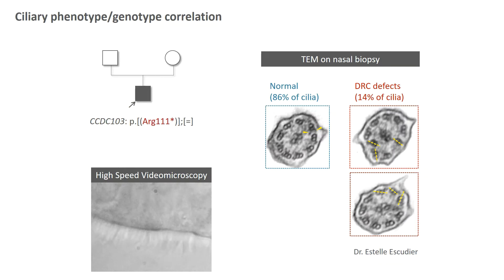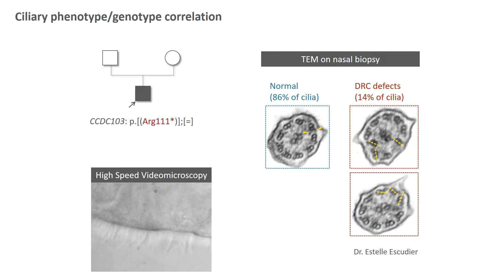For this patient we performed our NGS panel, and the first mutation that drew our attention was a nonsense or stop mutation in CCDC103. This mutation was only in the heterozygous state, so we thought that maybe we had missed the other mutation. We went back to the ciliary investigation of this patient, and as you can see on this movie, the cilia of this patient were motile — rigid with a reduced amplitude, but still motile.